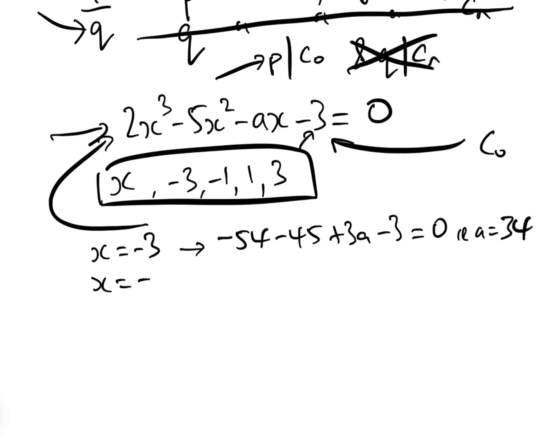When x equals minus 1, we have minus 2 minus 5. Again, just putting minus 1 as the solution in here. Add a minus 3 equals 0, i.e. a equals 10.